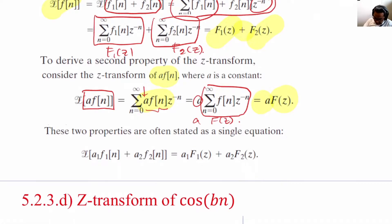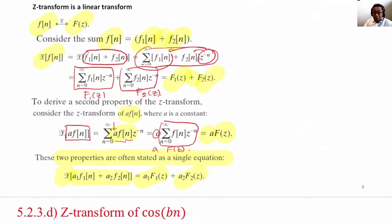Actually, most of the time, we use these two properties stated as a single equation, meaning that the Z-transform of the scaled version of F1N plus the scaled version of F2N is the scaled version of F1Z plus the scaled version of F2Z. So, Z-transform is a linear transform, and we often use this property to simplify our analysis.